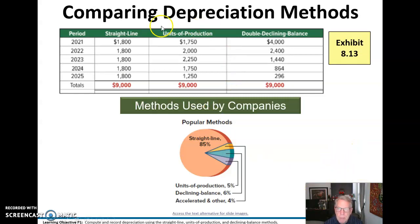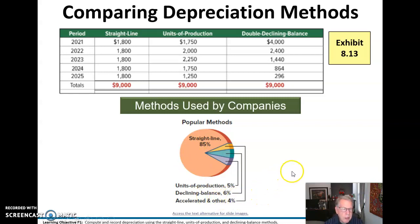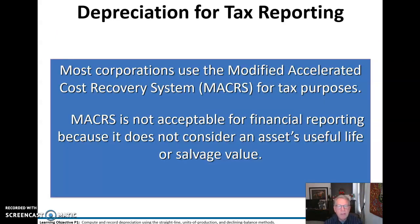If we compare all three methods — straight line, units of production, and double declining balance — we never depreciate more than $9,000. Most companies do use straight line depreciation for books, but they might use double declining balance or an accelerated depreciation cost recovery system — we call that MACRS — for tax purposes. MACRS is not acceptable for financial reporting because it does not consider the asset's useful life or salvage value.